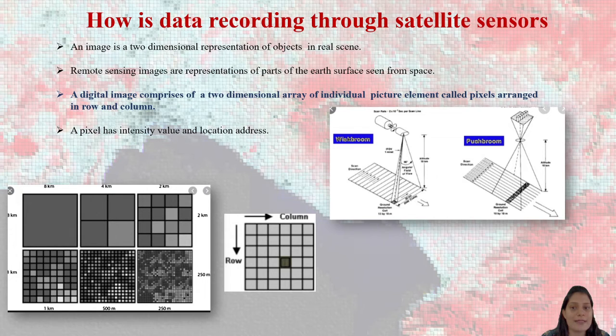A digital image comprises of two-dimensional array of individual picture element called pixel arranged in row and column. The yellow color part which you can see in the small box of what I have shown row and column is known as pixel. It is known as pixel. You all are aware about the pixel word, pixel.